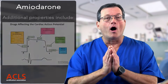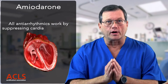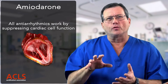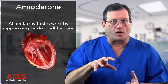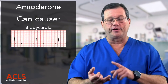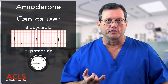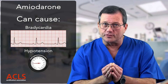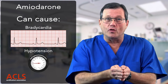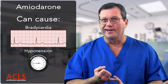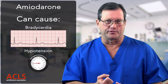All antiarrhythmics work by suppressing cardiac cell function — they're suppressing the function of the heart. Therefore, all antiarrhythmics can cause bradycardia and hypotension. When you know the exact mechanism of action of the drug, you can anticipate both the desired effects and the negative side effects.